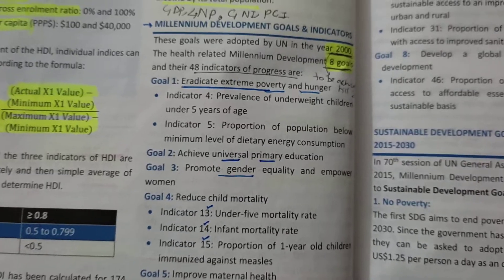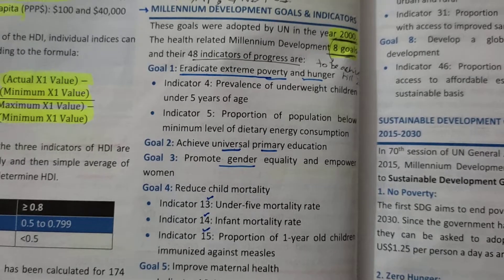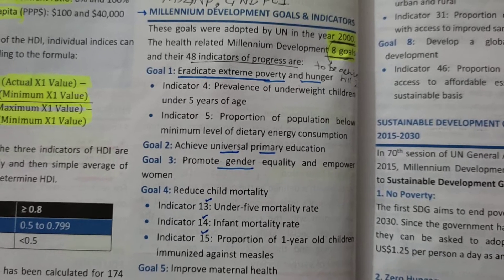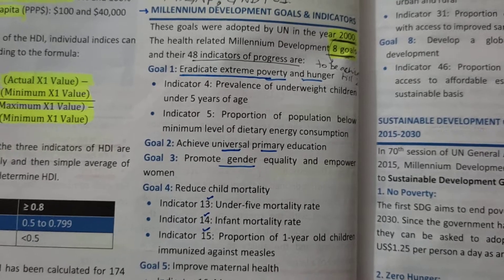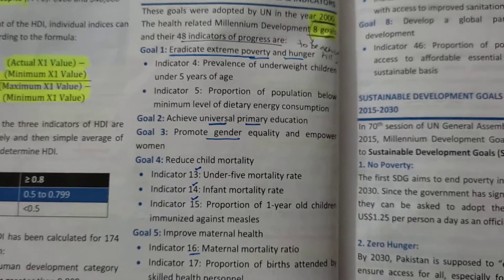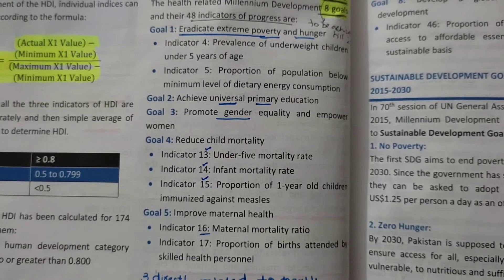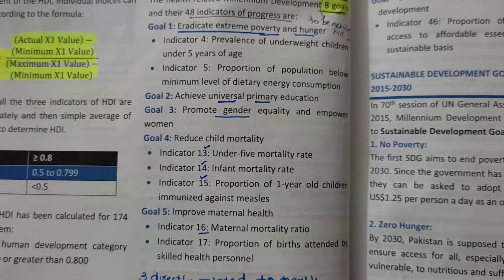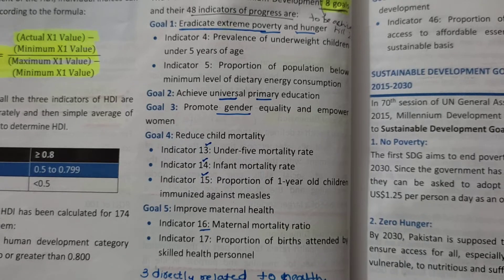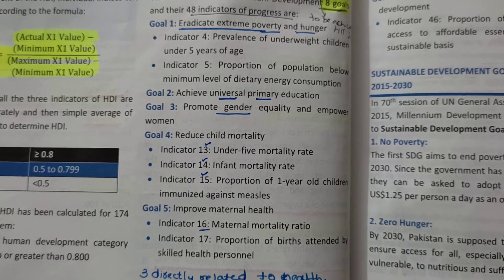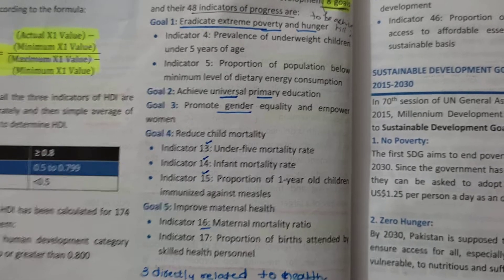Goal 2 is Universal Primary Education. Goal 3 is Gender Equality. Goal 4 is Reduced Child Mortality. This includes Indicator 13, 14, and 15.